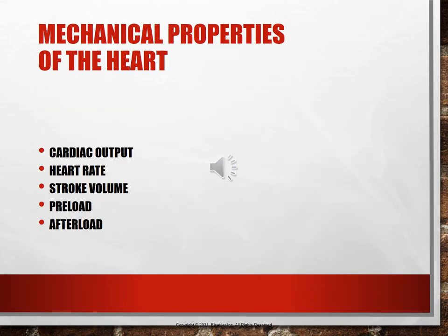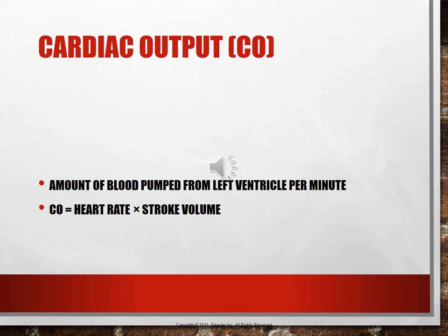Cardiac output is determined by multiplying heart rate times stroke volume. It is the amount of blood pumped out of the left ventricle every minute. In a normal adult, the range is between 4 to 7 liters per minute.